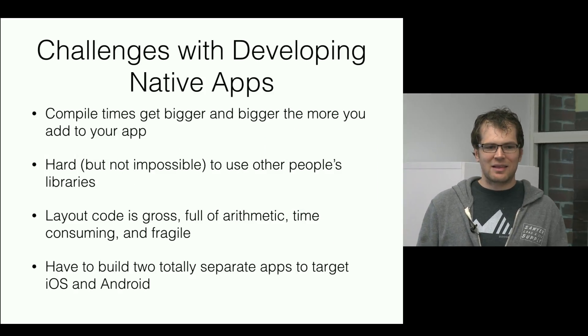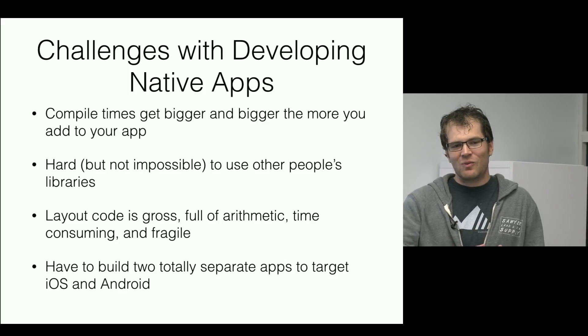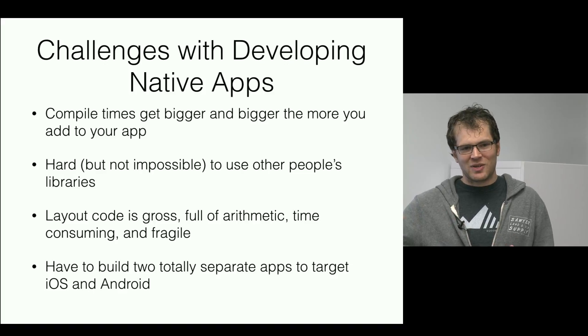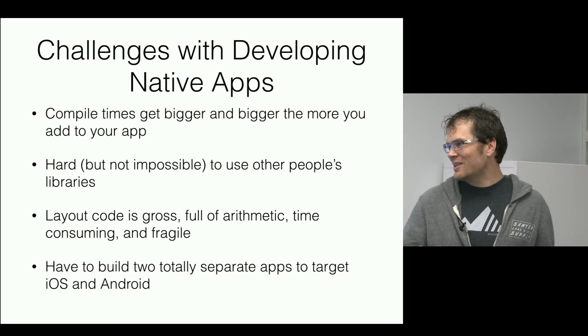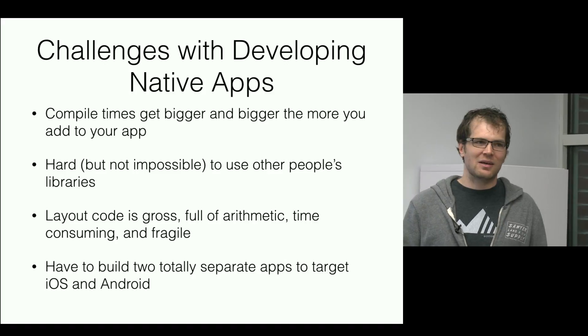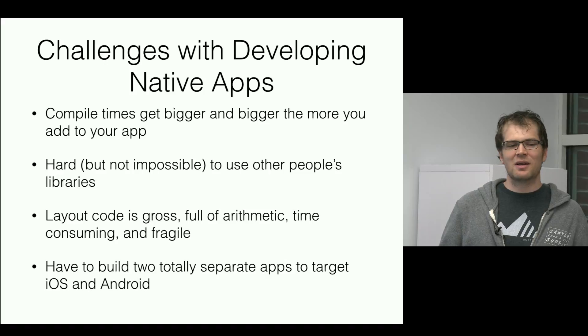There were a bunch of challenges with this. At the highest level, all the progress we made with the web in terms of making development faster and more accessible — we kind of went back in time to 1993 with native apps. You're writing native code where you're managing memory manually, worrying about allocating and deallocating things. And then as your app grew with more screens and more abstractions, every small change meant rebuilding could take minutes.